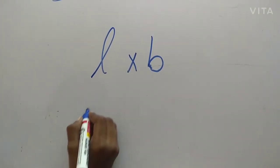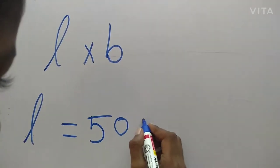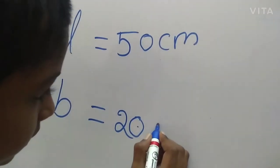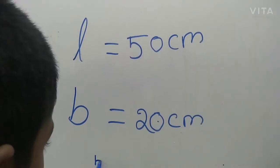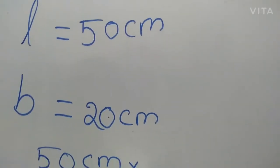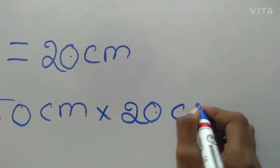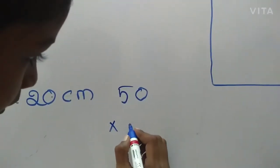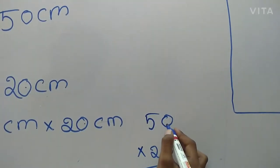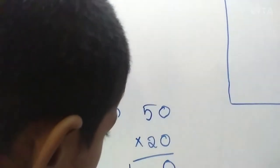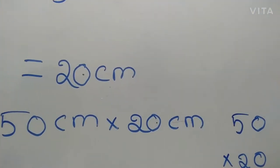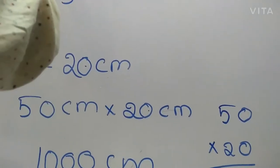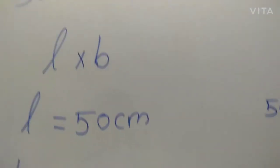What is the length? 50 centimeters. And breadth? 20 centimeters. So, we have to multiply 50 into 20. 20 is 0, 25 is 100 — 1,000 centimeters. 1,000 centimeters is the area of the rectangle for 50 centimeters and 20 centimeters.